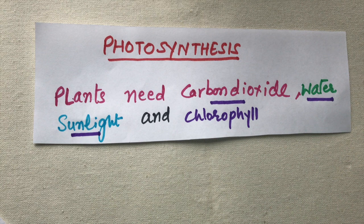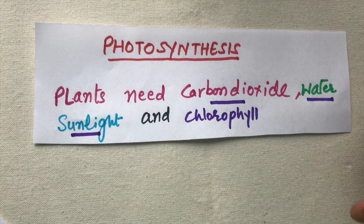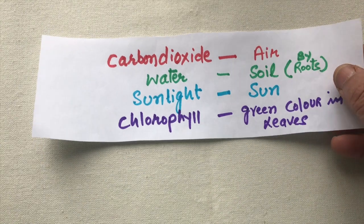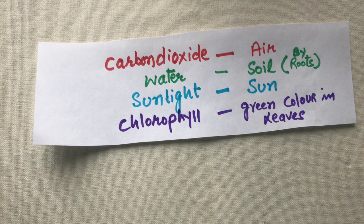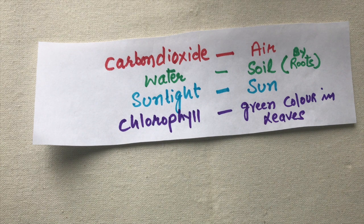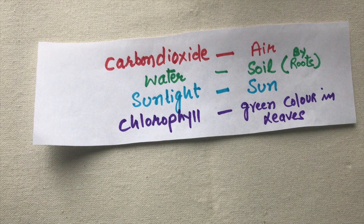For photosynthesis, plants need carbon dioxide, water, sunlight, and chlorophyll. They get carbon dioxide from the air, water from the soil with the help of roots, and sunlight from the Sun.